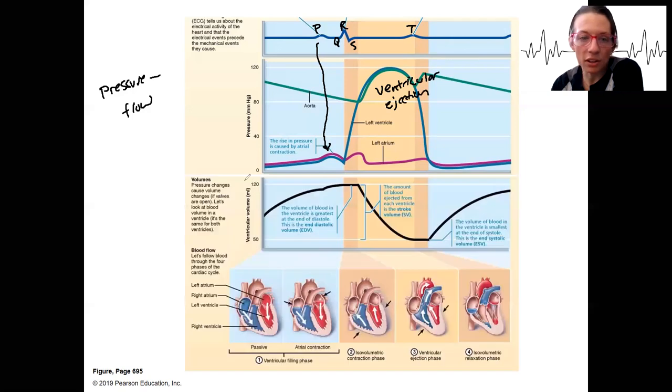So this graph here is ventricular volume, pretty simple, and it makes sense. We've got an increase in ventricular volume as we have filling of the ventricles, passive filling, and then atrial systole to top it off.